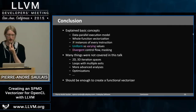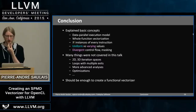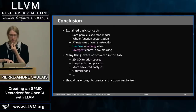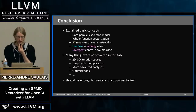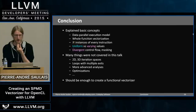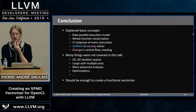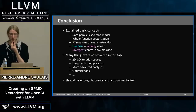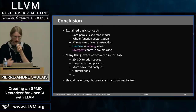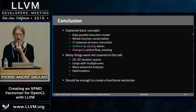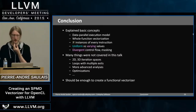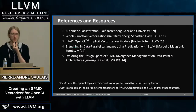In conclusion, we've covered the basic concepts of SPMD vectorization: a data parallel SPMD execution model, whole function vectorization (transforming a function for one instance into one for n instances), uniform versus varying values, and divergent control flow requiring masking or predication. Topics not covered include iteration spaces greater than one dimension, loops with multiple exits, and more advanced analysis and optimizations. This should be enough to get started building your own vectorizer.